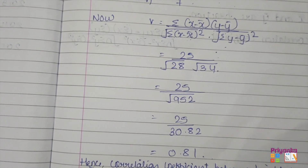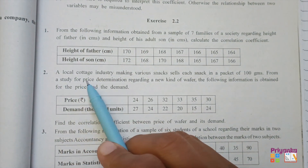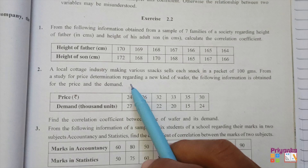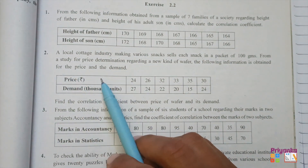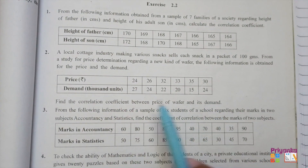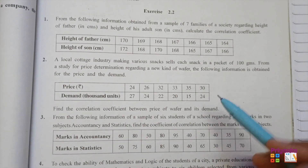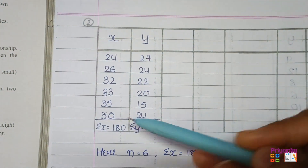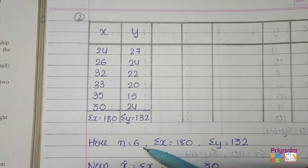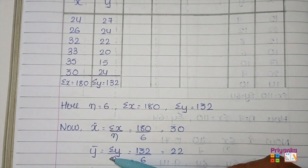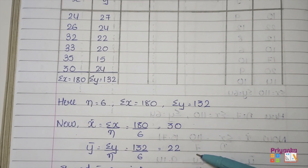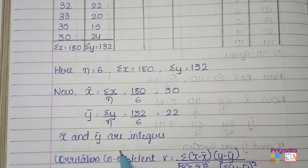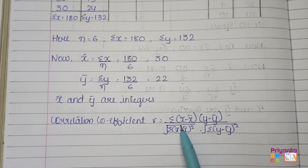Moving to Question 2: A local cottage industry sells snacks in packets of 100 grams. The following information is obtained for the price and demand of a new kind of wafer. Find the correlation coefficient between the price of wafer and its demand. First take the totals of x and y. Here n = 6. We find x-bar and y-bar, and since both answers are integers, we use the same integer formula.